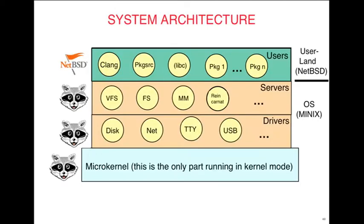Here's the system architecture. The bottom layer is the microkernel running in kernel mode — it handles interrupts and physically manages the page table. Then come the drivers, all processes. Then all the servers — that's just Minix. But in user land we have packages, Clang, and all that stuff — that's NetBSD. So it's NetBSD re-implemented on the Minix infrastructure with the reliability and self-healing properties of Minix, but to the user it looks like NetBSD. We think this is the best of at least two possible worlds.